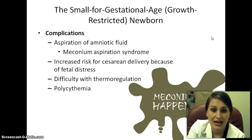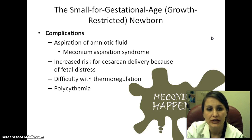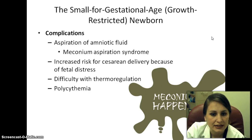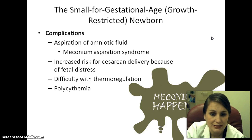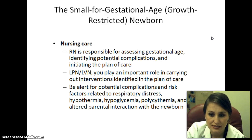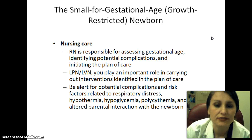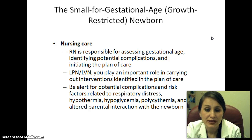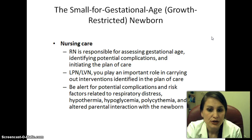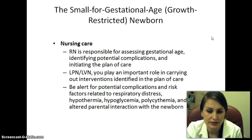Complications include aspiration of amniotic fluid and meconium aspiration syndrome, where the baby can inhale a meconium stool. There is increased risk for cesarean delivery due to fetal distress, difficulty with thermoregulation, and polycythemia — excess red blood cells. Nursing care: the RN assesses gestational age, identifies potential complications, and initiates the plan of care. As an LPN, you'll carry out interventions and be alert for respiratory distress, hypothermia, hypoglycemia, polycythemia, and altered parental interaction.